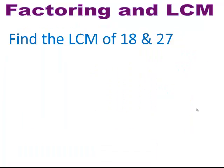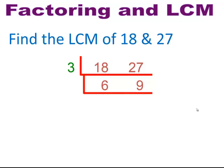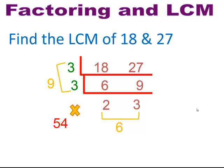Pause and try. Write the numbers in a line and draw your L shape around them. Divide out prime factors — in this case the smallest prime factor is 3, then 3 again — until they have no more common factors. Multiply the side numbers, then the bottom numbers, then multiply those two results together. The least common multiple here would be 54.